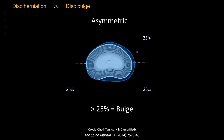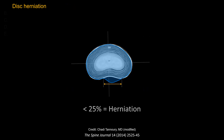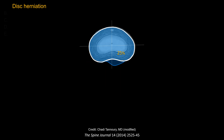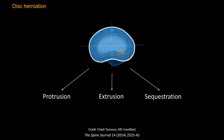Sometimes the disc bulge is asymmetric in distribution, involving only three quadrants — this is an asymmetric disc bulge. If the disc material extends beyond the confine of the vertebral body for less than 25% or less than 90 degrees, that's classified as disc herniation. For disc herniation, you can further classify them into disc protrusion versus disc extrusion versus sequestration.